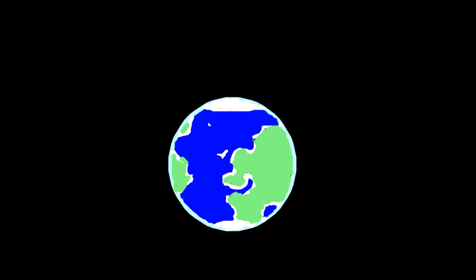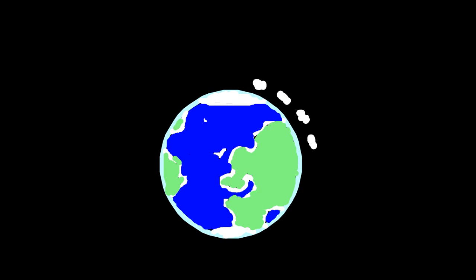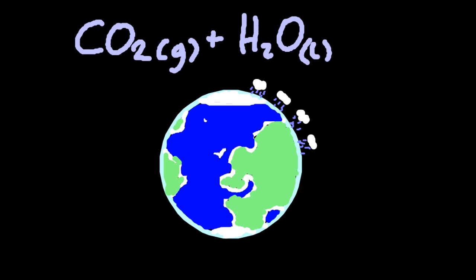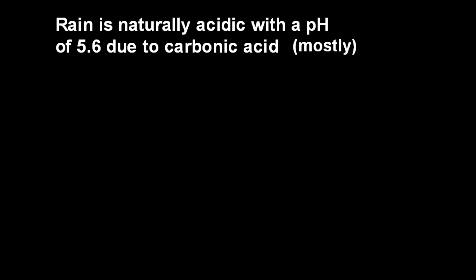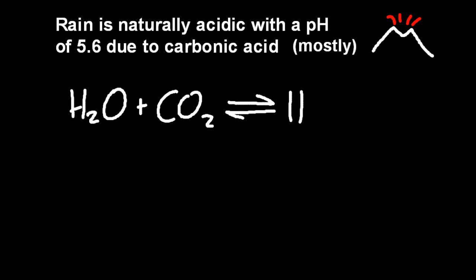Even before modern man started to mess with the planet's atmosphere, rain has always been naturally acidic. Carbon dioxide and water present in the atmosphere reacted together to produce carbonic acid, H2CO3—you need to memorize that. That's a weak acid. Now when I say mostly, volcanoes and lightning strikes can also produce acid gases that dissolve in water to make acid rain. Oh, that looks a bit like a sick fish.